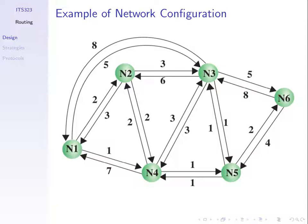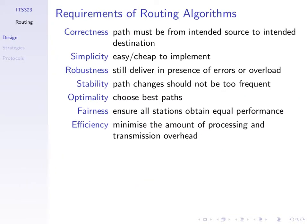We need a routing algorithm that not only calculates the path, but also discovers that information. How does node 1 know the cost of the link between nodes 5 and 6? These nodes may be spread across the country, operated by different people. So the operator of node 1 may not know that a certain link exists — they need to learn about links between other nodes and their costs. That's what a routing algorithm or protocol does.